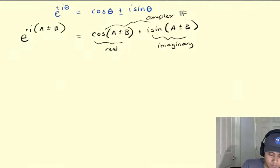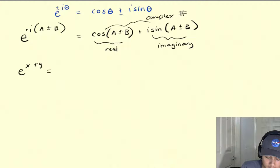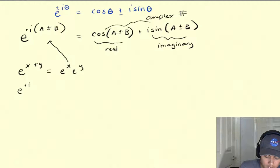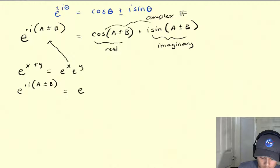Now we're going to use a property of the exponential function. Remember that e to the (x plus y) is the same as e to the x times e to the y. This is just a common property of exponentials, and if we apply it to our term, e to the i·(a plus or minus b) equals e to the i·a times e to the plus or minus i·b.